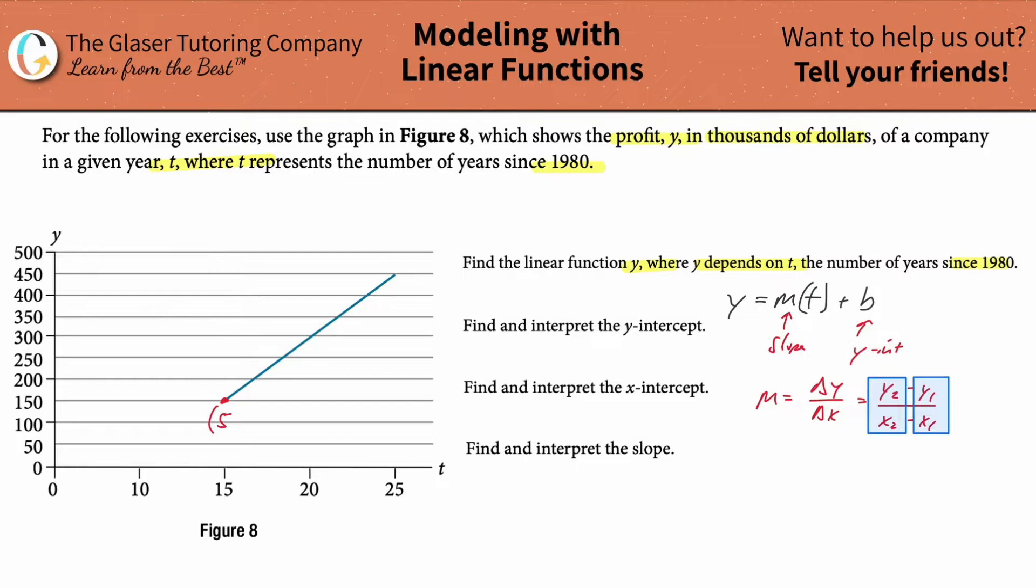So the coordinates here of this point will be 15, 150, because that's the X and the Y value. And maybe I'll choose this point. At this point, it looks like it's going to be X value of 25, and the Y value is going to be 450. Call this your twos and call this your ones.